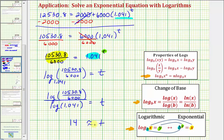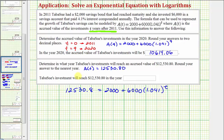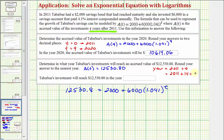Now that we know that T is approximately 14 years, we can now determine in what year the investment account will reach the value of $12,530.80. The year would be equal to 2011 plus T, or in this case, 2011 plus 14, which gives us 2025. I hope you found this helpful.